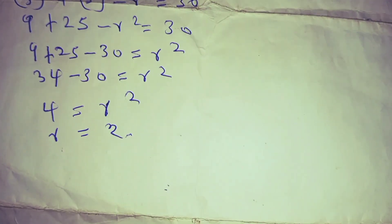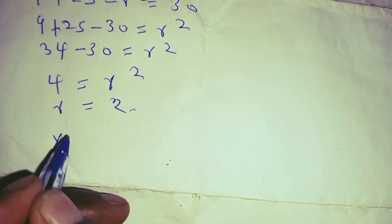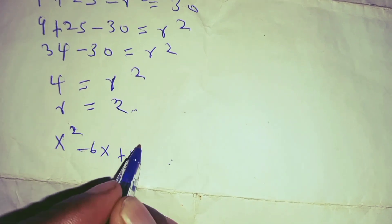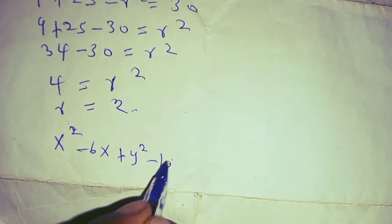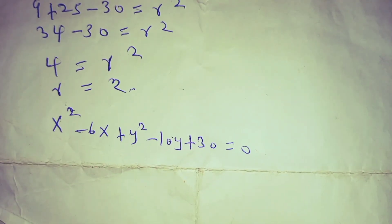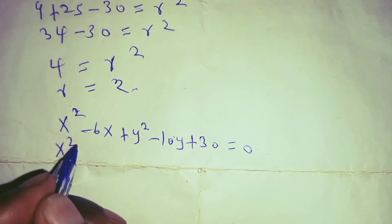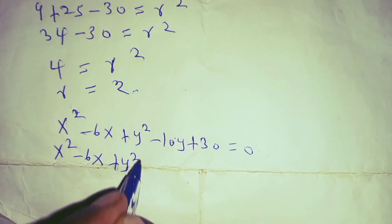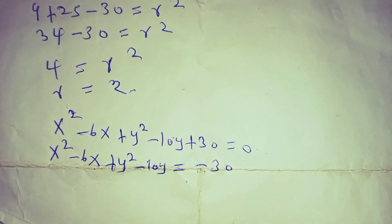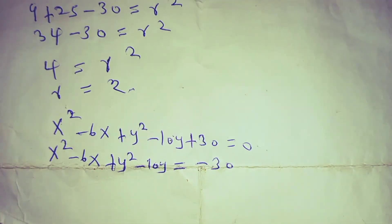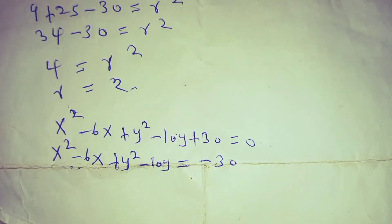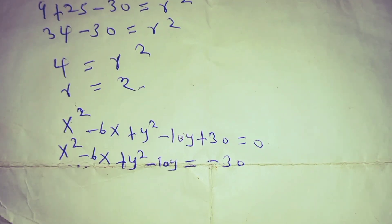Alternatively, starting from x squared minus 6x plus y squared minus 10y plus that constant equals zero, you can rearrange by taking the constant to the right-hand side: x squared minus 6x plus y squared minus 10y equals the negative of that constant. Then you complete the square on the x terms and on the y terms.